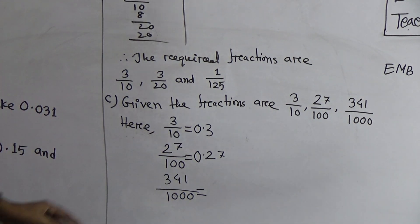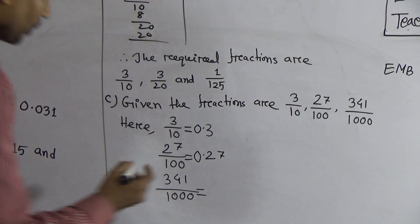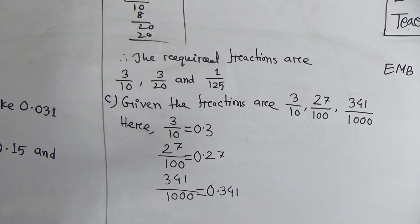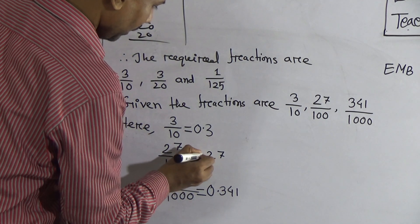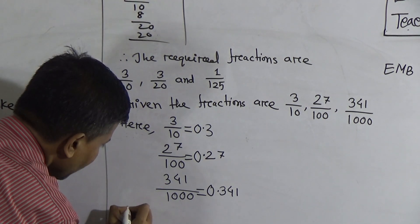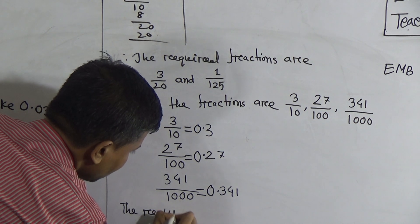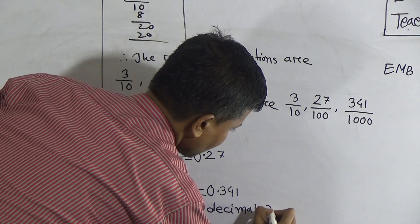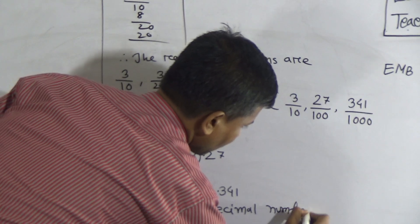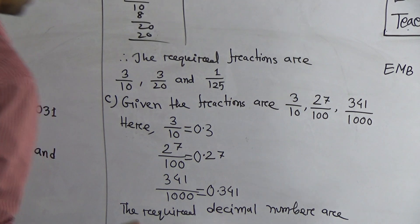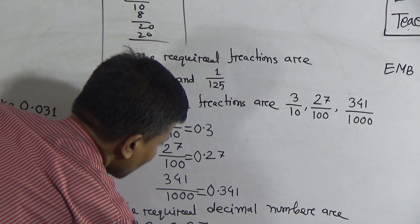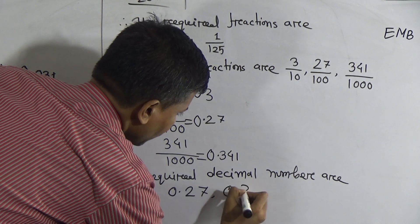For 341 by 1000: count the zeros from right to left. The required decimal numbers are 0.3, 0.27, and 0.341.